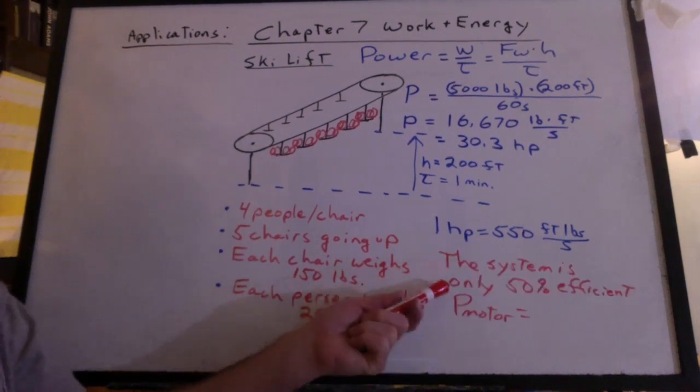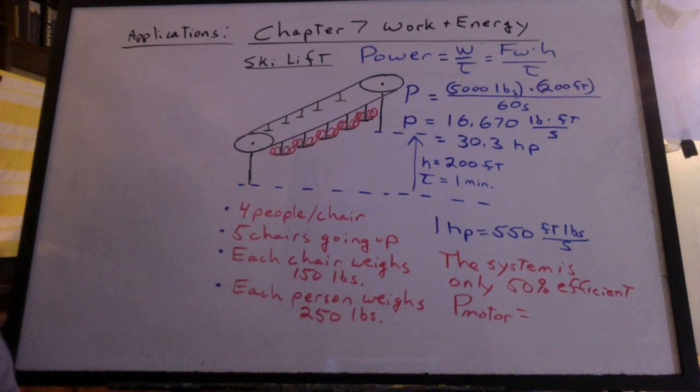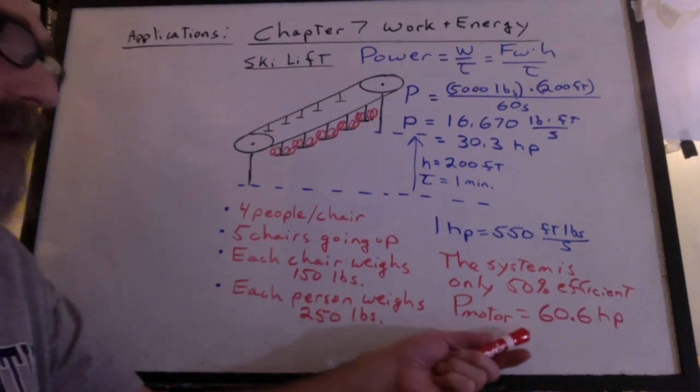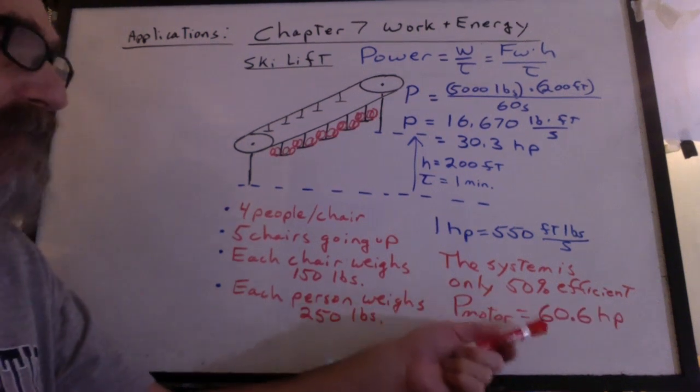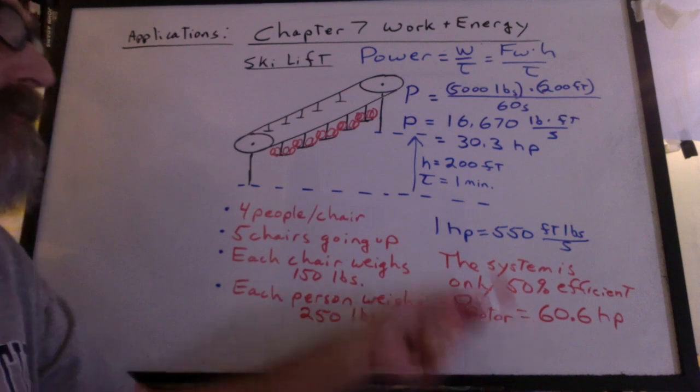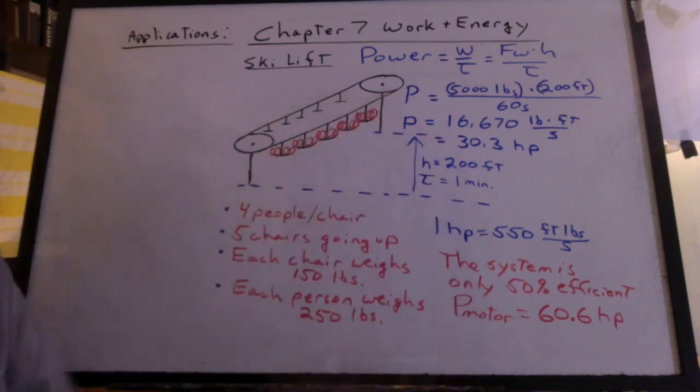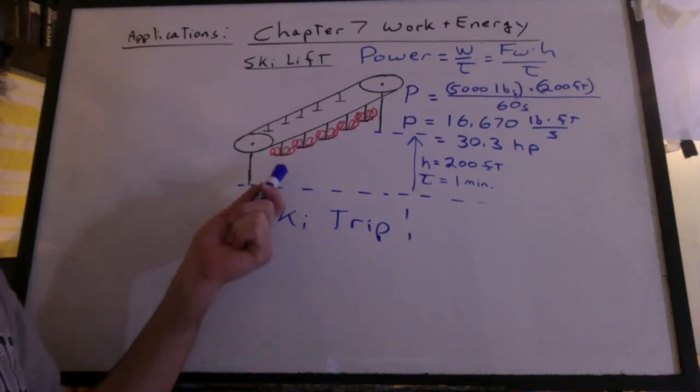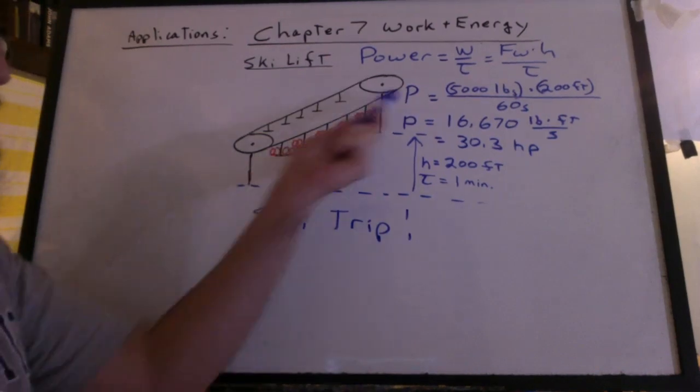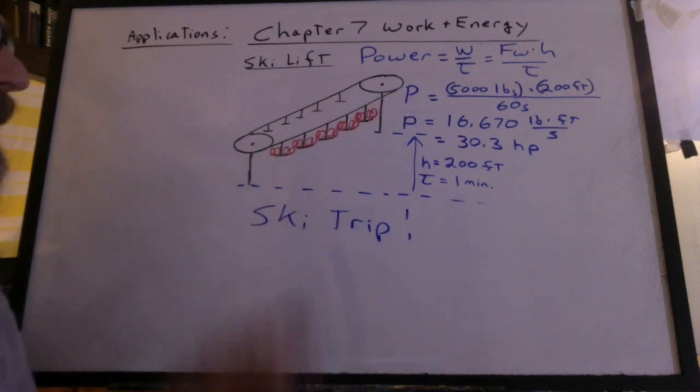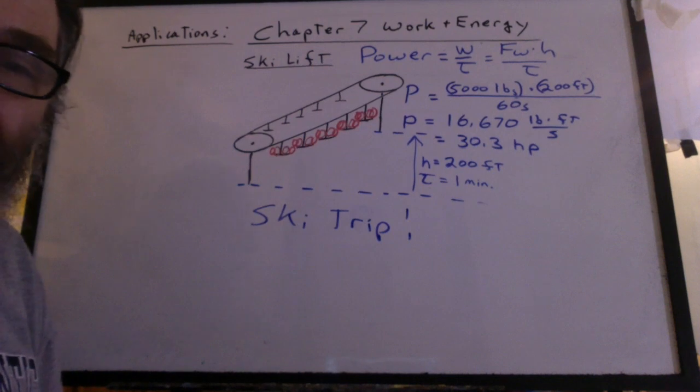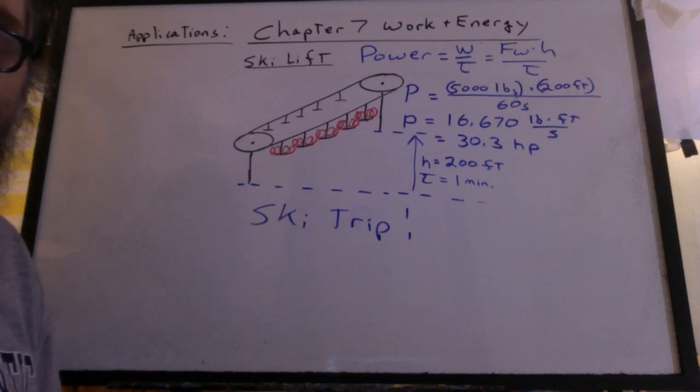What if I told you that the system was only 50% efficient? How big of a motor would you need? You'd have to double it, so that when you take 50% of that power, you get the power required to raise everybody up. When you go on a ski trip, you can actually time yourself going up the lift and count the number of chairs and estimate the power required to run the lift. Then you can go look it up or ask an operator how big the motor is.